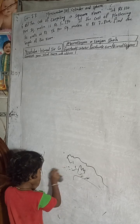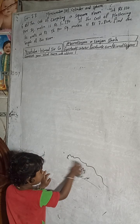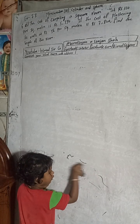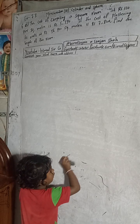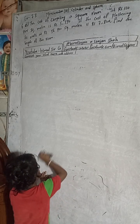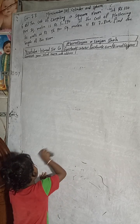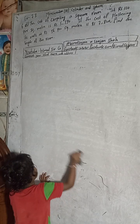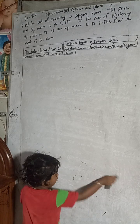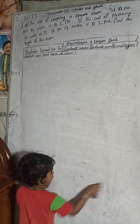Hi class 9 and 10 students, welcome back to Bimal Sarji's YouTube channel. This is question number 6d, exercise 7.3 mensuration, third part — cylinder and sphere — class 9 compulsory maths.